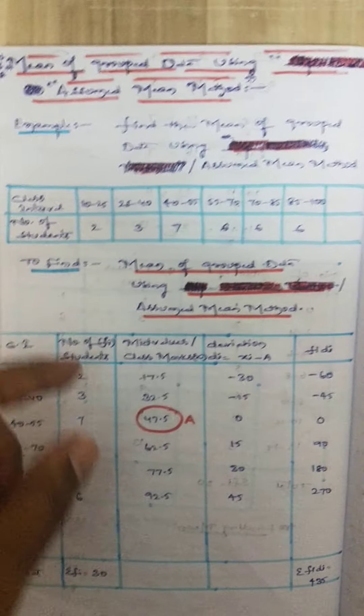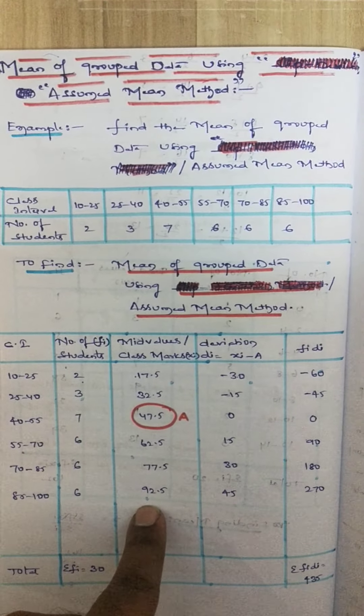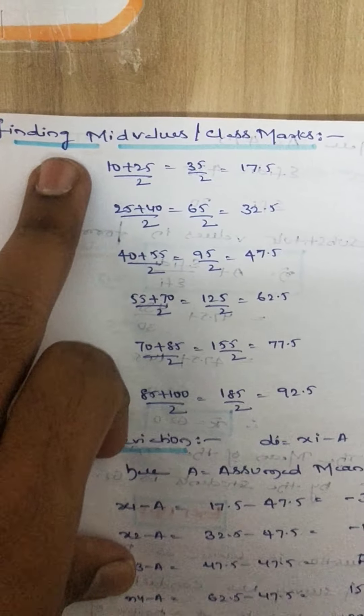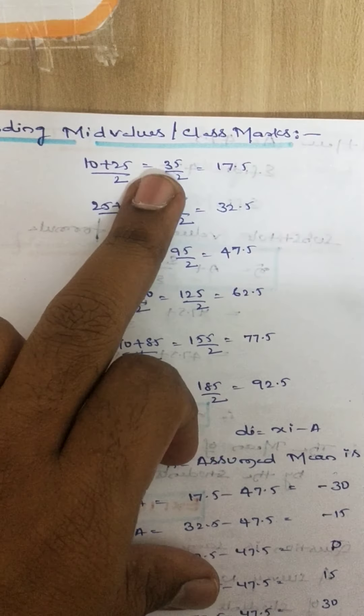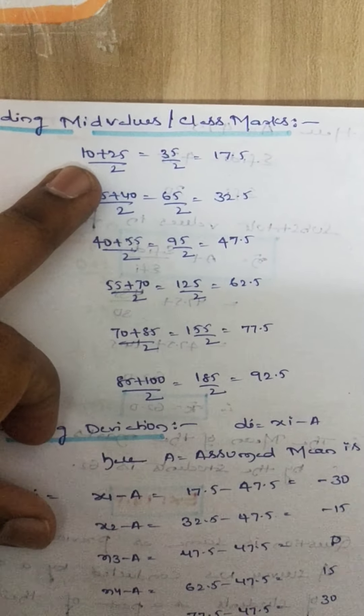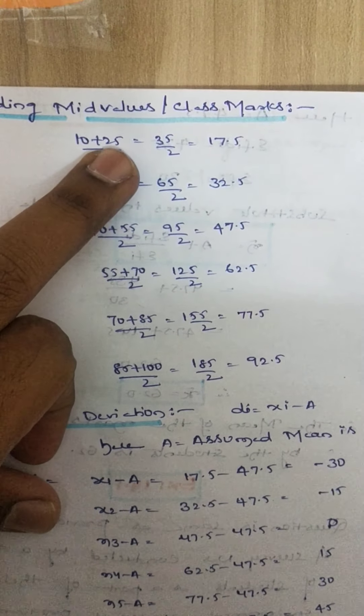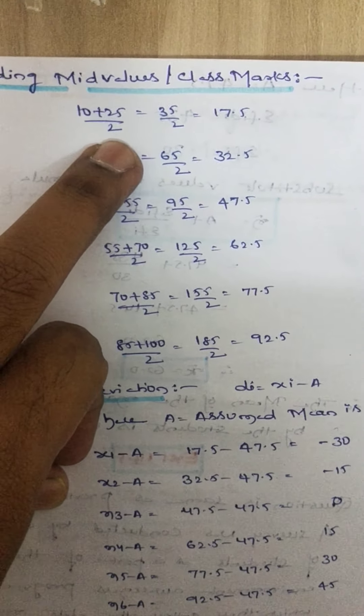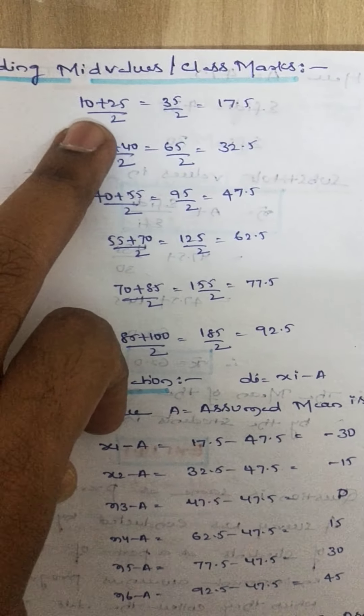For solving mid values, take the characterization part in another page for easy understanding. How can we find the mid values or class marks? Take the lower boundary and upper boundary as sum, divide by 2. They are the mid values.